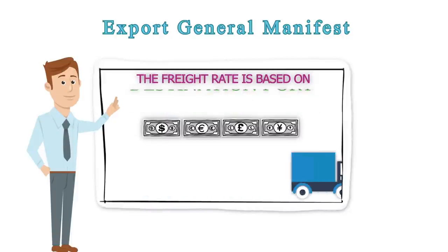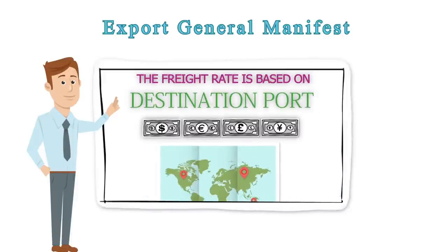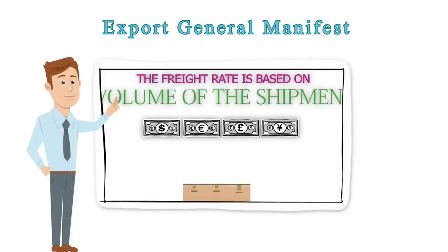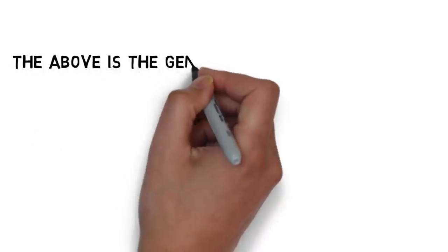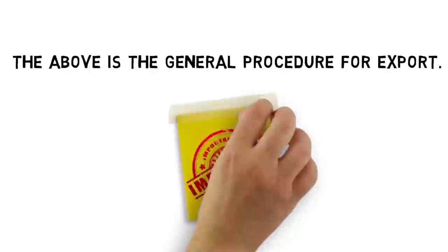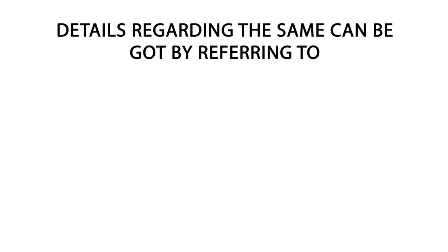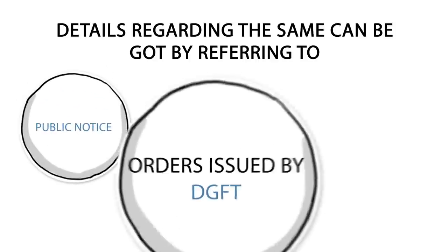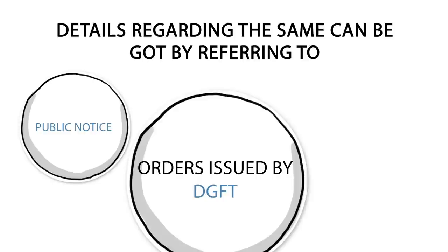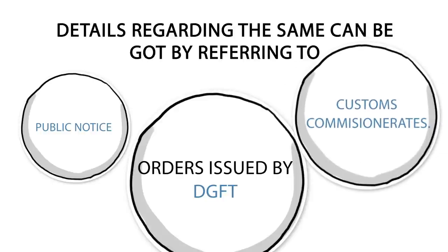We will discuss drawback claims in further videos. The above is the general procedure for export. An important point to note is that more augmented procedures exist for specified schemes. Details regarding the same can be obtained by referring to public notices and orders issued by the DGFT and Customs Commissioner.